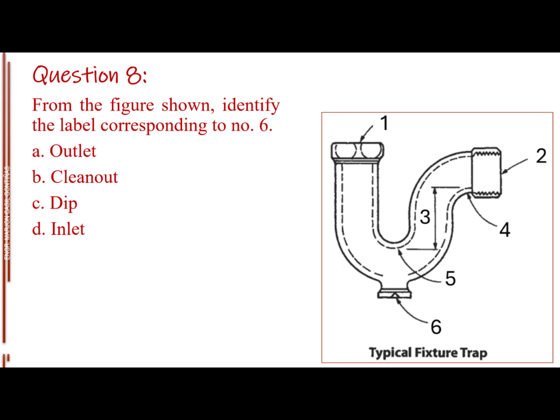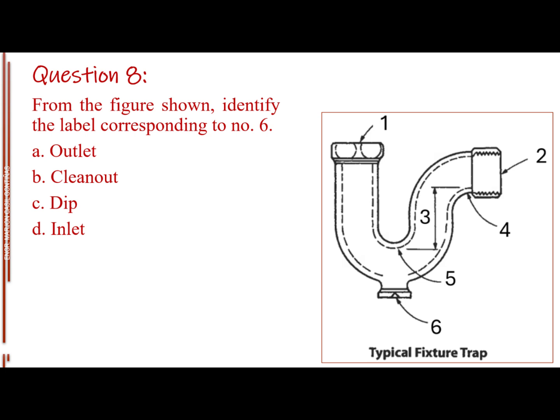Question number 8. From the figure shown, identify the label corresponding to number 6. Letter A, outlet. Letter B, clean out. Letter C, dip. Letter D, inlet. The answer is letter B, clean out.